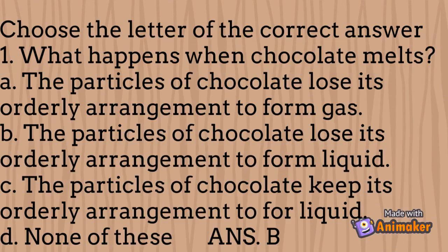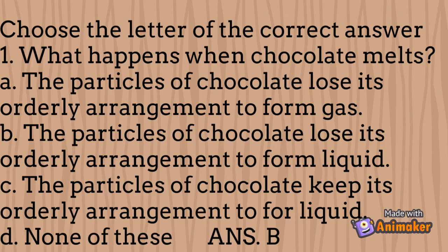Assessment: Choose the letter of the correct answer. Number 1: What happens when chocolate melts? A. The particles of chocolate lose their orderly arrangement to form gas. B. The particles of chocolate lose their orderly arrangement to form liquid. C. The particles of chocolate keep their orderly arrangement to form liquid. D. None of these. Answer: Letter B.